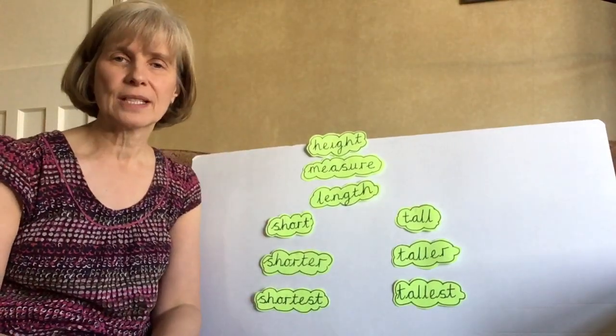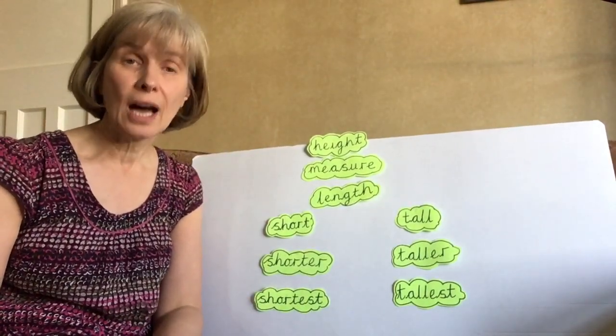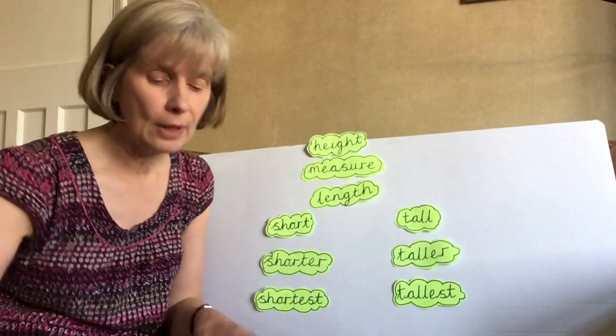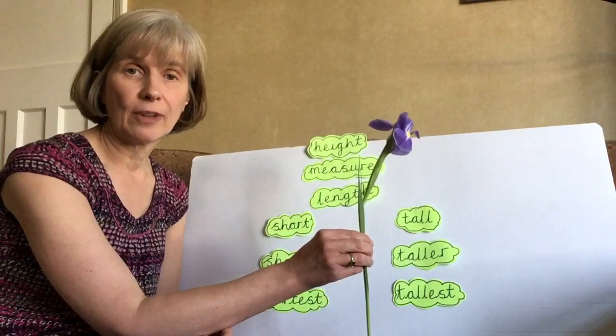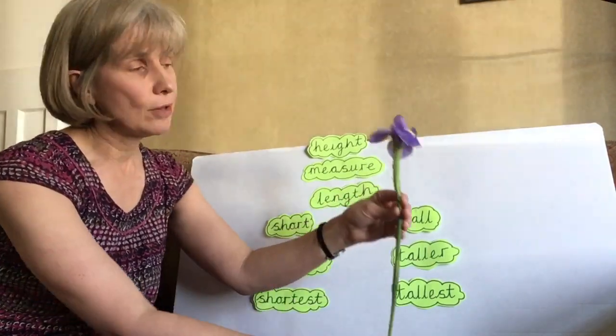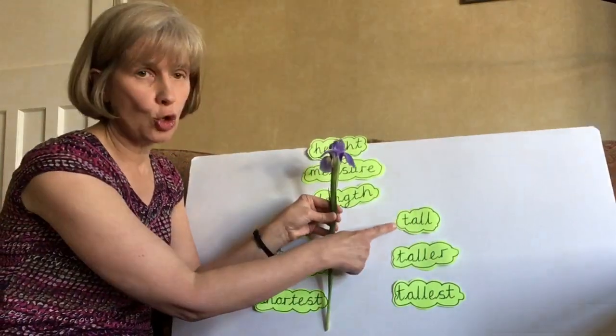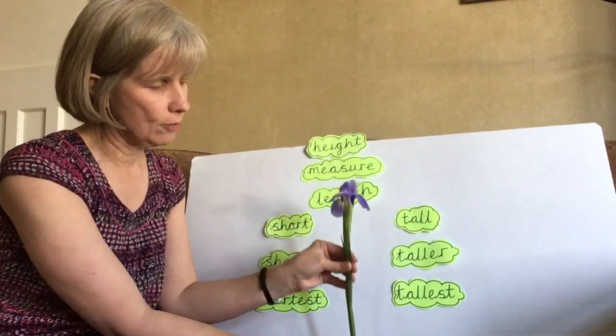Now, to help us understand more about these words, I've got some flowers to show you. First of all, I've got an iris. This lovely purple flower is an iris. This iris is quite tall. This word goes with the iris. It's tall.